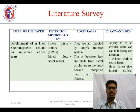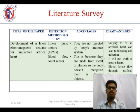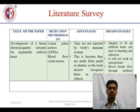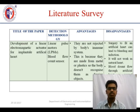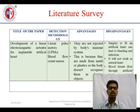Coming to the disadvantages: doing surgery to fix this artificial heart can lead to bleeding and infection. It will not work like the natural heart — the natural heart pumps 70 times per minute, but the artificial heart can be set by the user via the outside backpack from 70 to 100 beats per minute. Also, blood flows through the original heart easily, but the artificial heart may cause blockage or leakage of blood to internal organs.